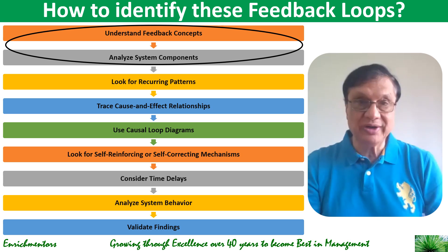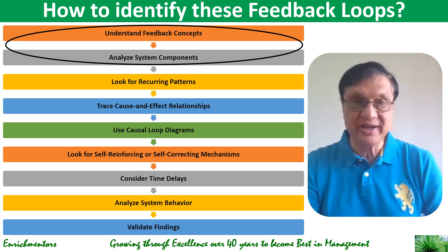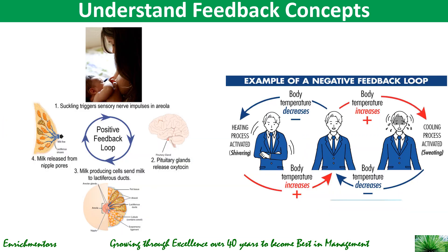Understanding the feedback concept means familiarizing yourself with the concept of feedback in the system you are studying. A feedback occurs when an output of a system or part of the system influences its own behavior or the behavior of other components in the system. As we have said, there are two types of feedback: positive, which reinforces the input, and negative, which counteracts the input. You need to identify where this is happening in the system when you start identifying feedback loops.